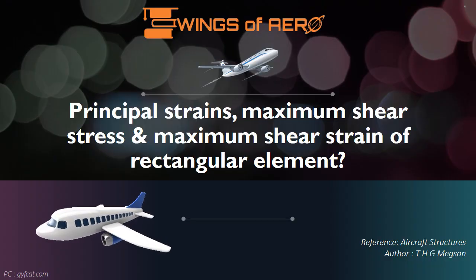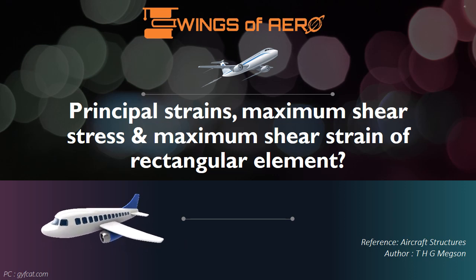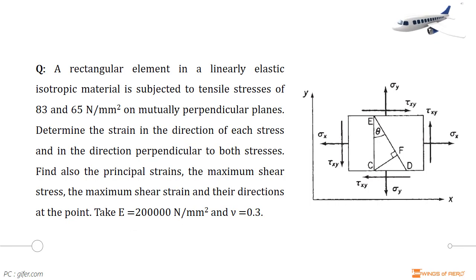Now, we are going to learn how to find the principal strains, maximum shear stress and maximum shear strain of a rectangular element. Consider a rectangular element in a linearly elastic isotropic material subjected to tensile stresses of 83 and 65 N per mm square on mutually perpendicular planes. Determine the strain in the direction of each stress and in the direction perpendicular to both stresses. Find also the principal strains, the maximum shear stress, the maximum shear strain and their directions at the point. Take E equal to 200,000 N per mm square and nu equal to 0.3.